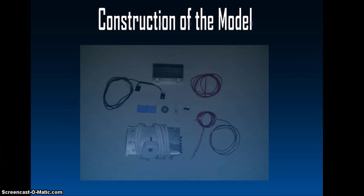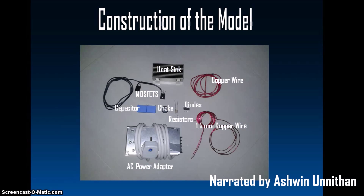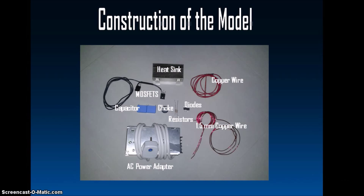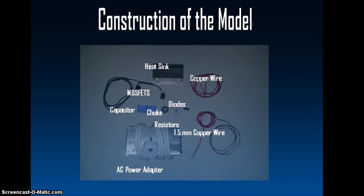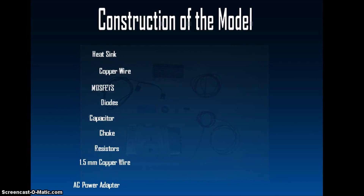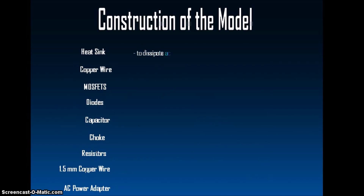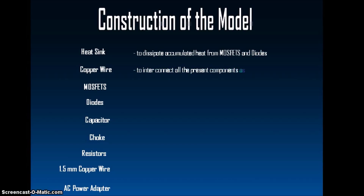Before we begin the construction of the model, let's cover the components used. These are some of the components necessary for the construction of the heater. The function of the heat sink is to dissipate the accumulated heat from MOSFETs and diodes, while the function of the copper wire is to interconnect all present components as per the circuit diagram.